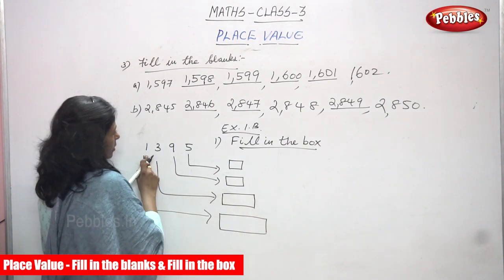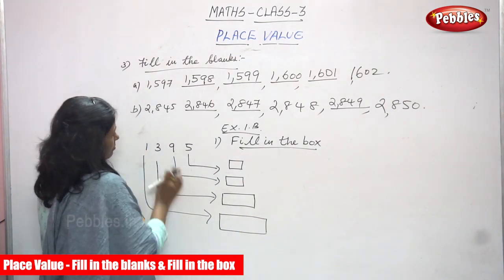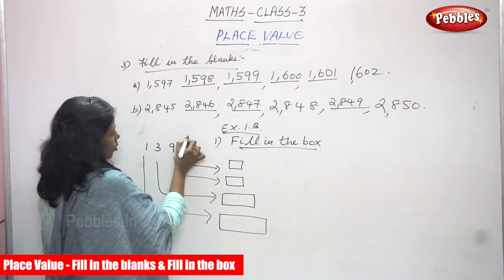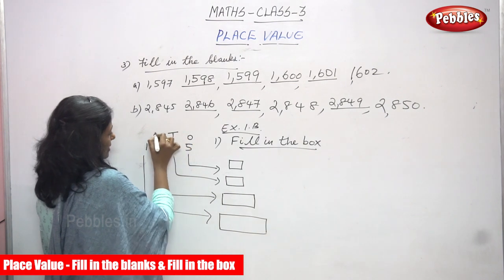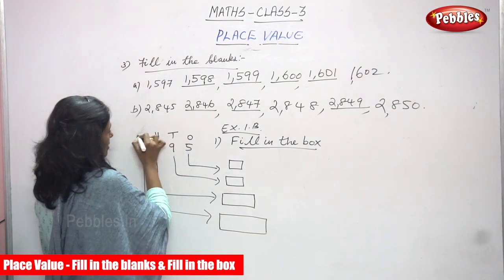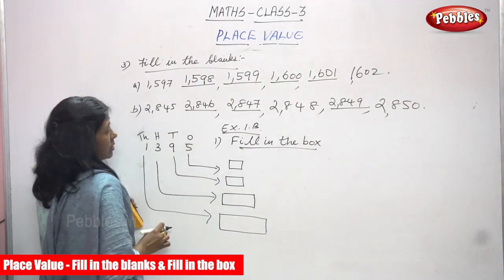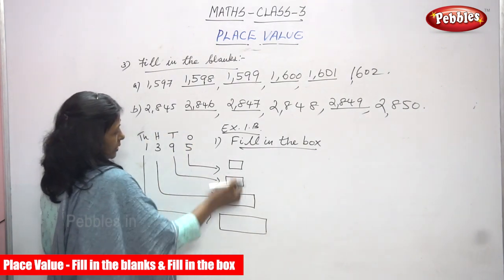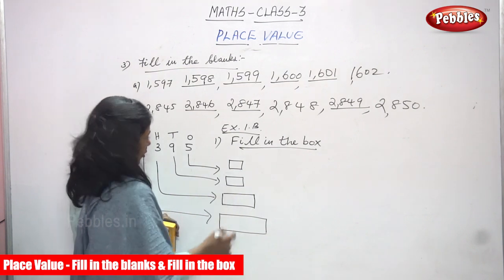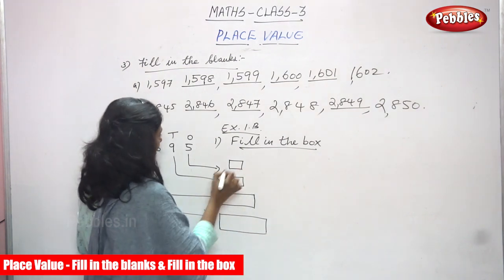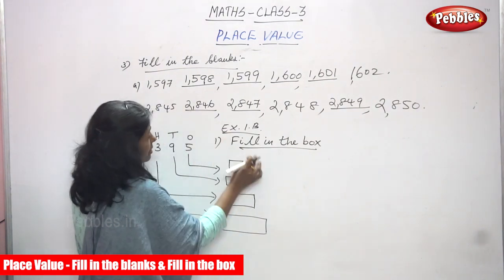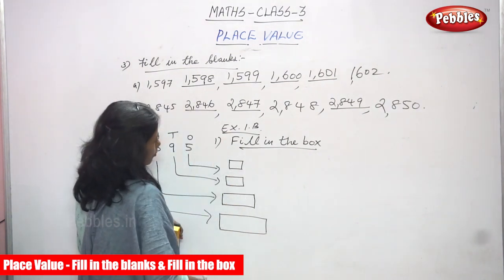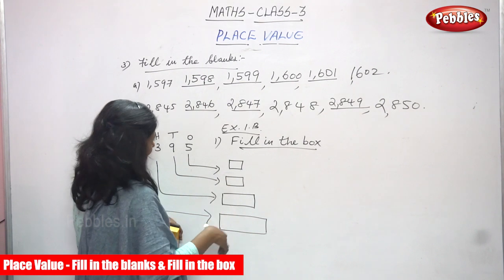So here this is also fill in the blanks, but this involves place values: ones, tens, hundreds, and thousands — you know that. So you have to write in the boxes here. Fill in the blanks, fill in the box. Next exercise.